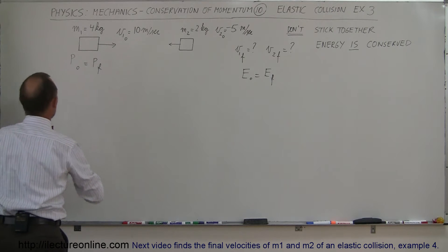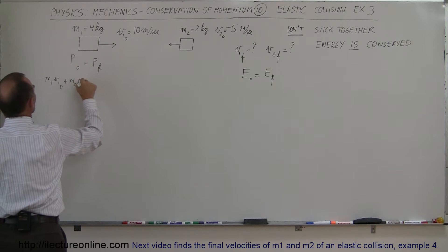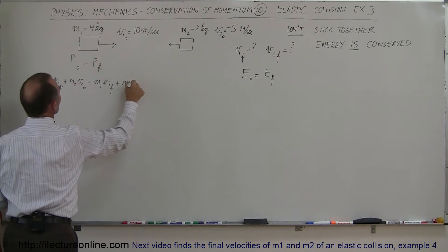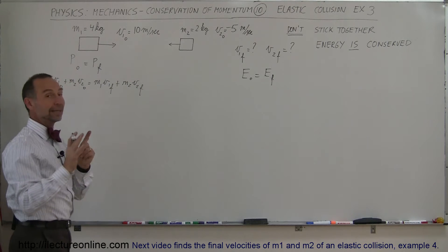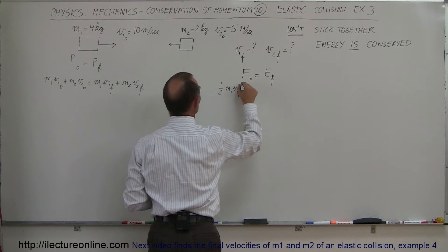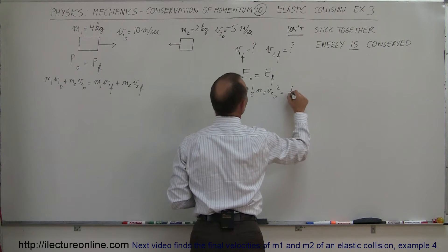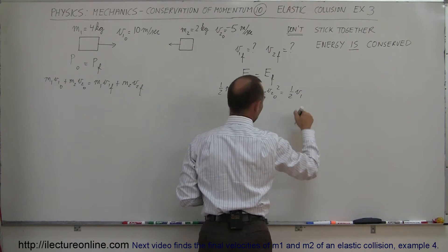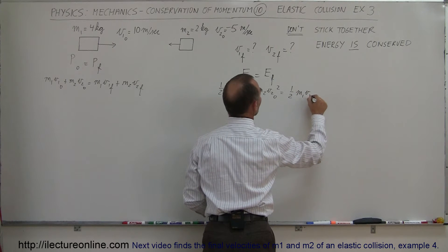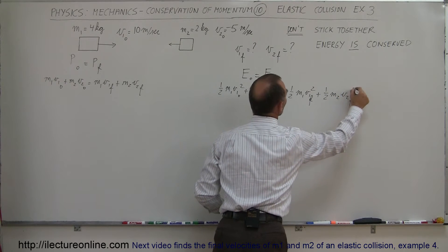For the momentum equation: M1·V1i + M2·V2i = M1·V1f + M2·V2f. For the energy equation: one-half M1·V1i² + one-half M2·V2i² = one-half M1·V1f² + one-half M2·V2f².